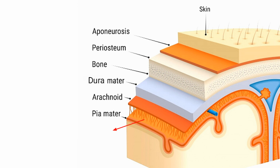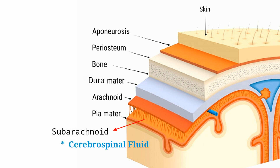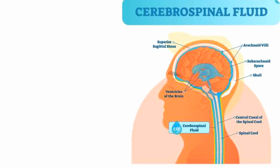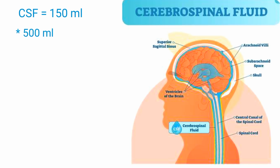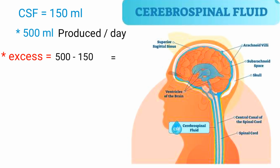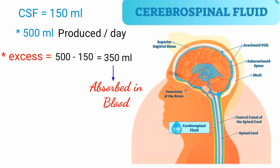Between the leptomeninges is the subarachnoid space, which houses the CSF — that is, cerebrospinal fluid. CSF is a clear, watery liquid which is pumped around the spinal cord and brain. At any given moment there are about 150 milliliters of cerebrospinal fluid in the body. This is constantly replaced with around 500 milliliters of new CSF produced every day, and the excess — 350 milliliters — is absorbed into the blood.